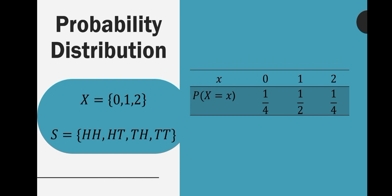For the third value, we have two. Similar to the first one with zero, there is only one element in the sample space that has two tails. So its probability will be one out of four, the total number of elements in the sample space. The probability corresponding to two is one out of four.